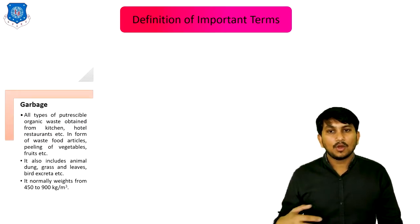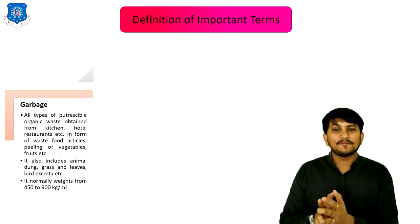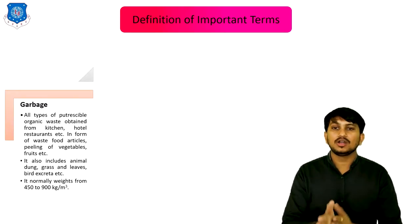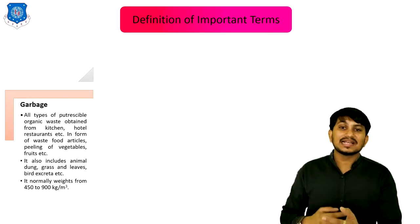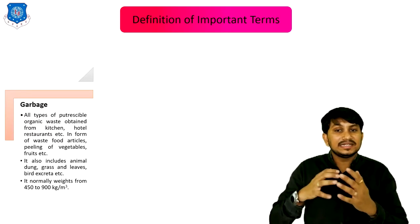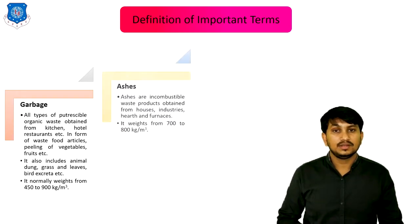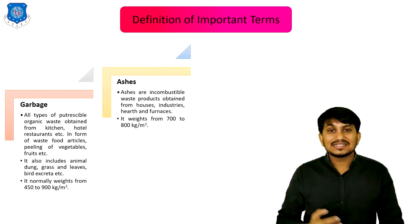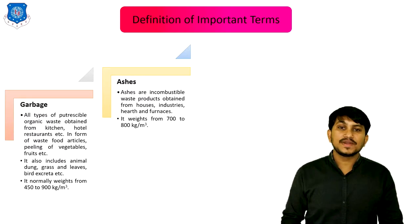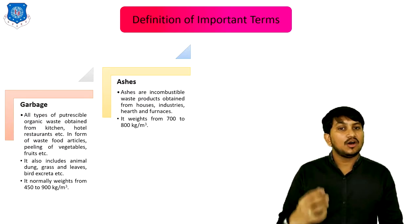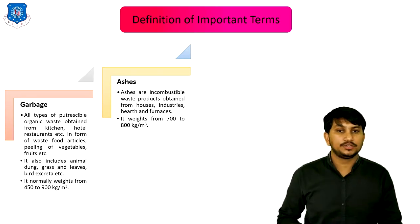Second is Garbage — all types of putrescible or biodegradable waste, or organic type of waste obtained from kitchen, hotel and restaurant, is called Garbage. It also includes animal dung, grass and leaves, bird excreta. It normally weighs about 450 to 900 kg per cubic meter. Third is Ashes. These are incombustible waste produced from houses, industries, or food businesses. It weighs from 700 to 800 kg per cubic meter.